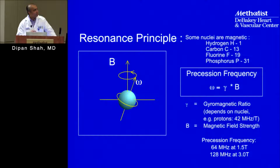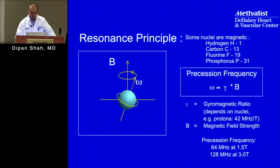At a 1.5 tesla field strength, the hydrogen proton spins at a frequency of 64 megahertz. At 3 tesla, the frequency is 128 megahertz. So protons spin at a frequency directly related to the magnetic field present.